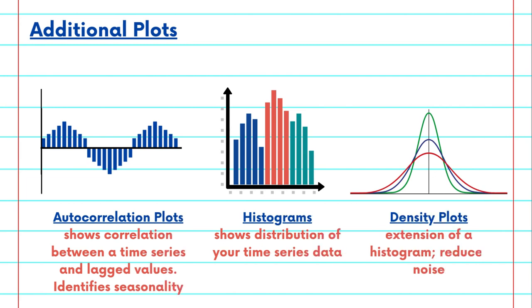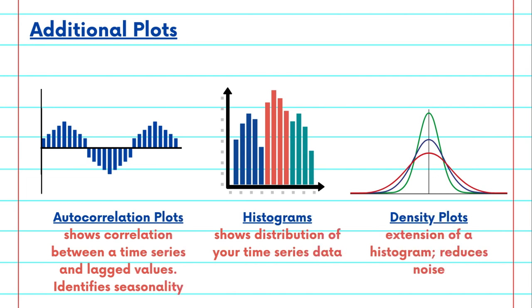Autocorrelation plots show the correlation between a time series and its lagged values. They are crucial for identifying seasonality and selecting appropriate forecasting models.